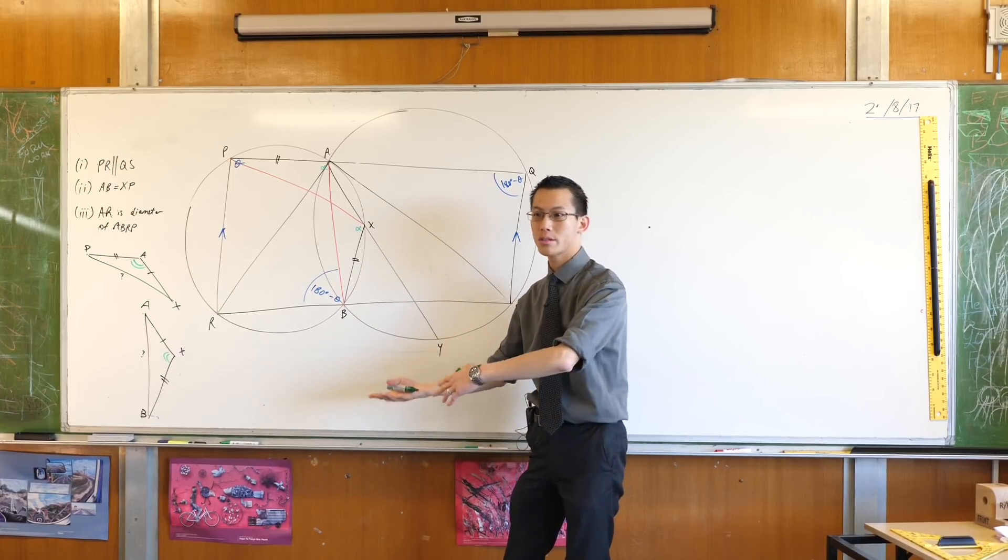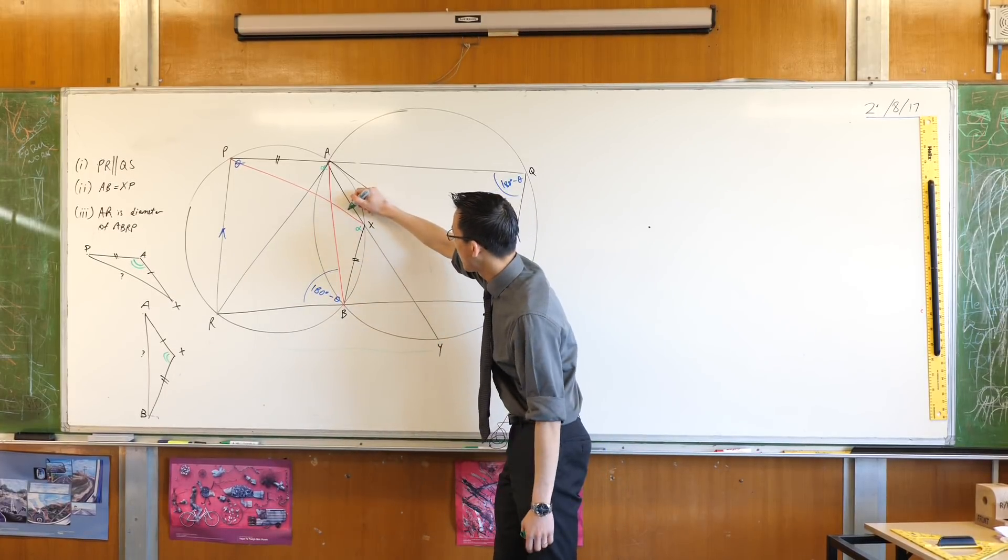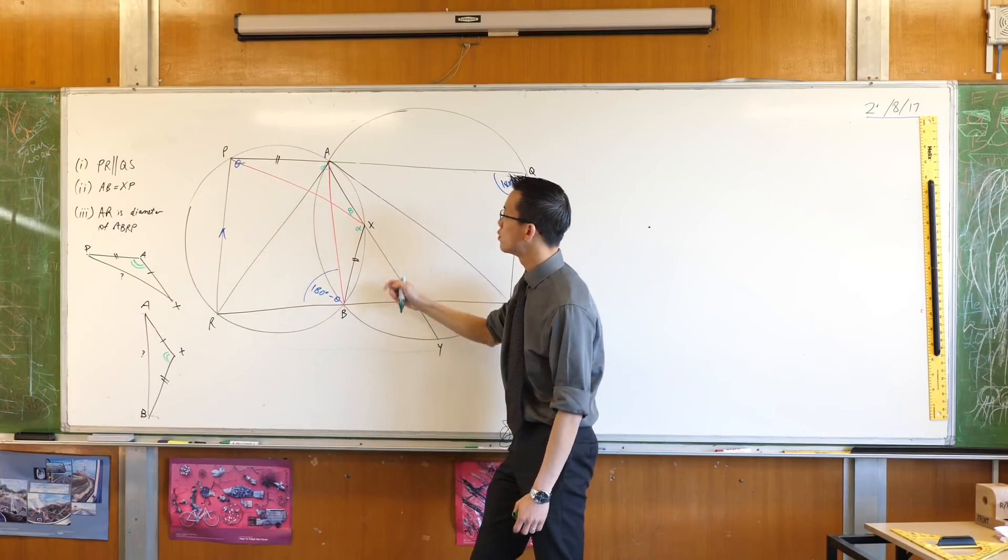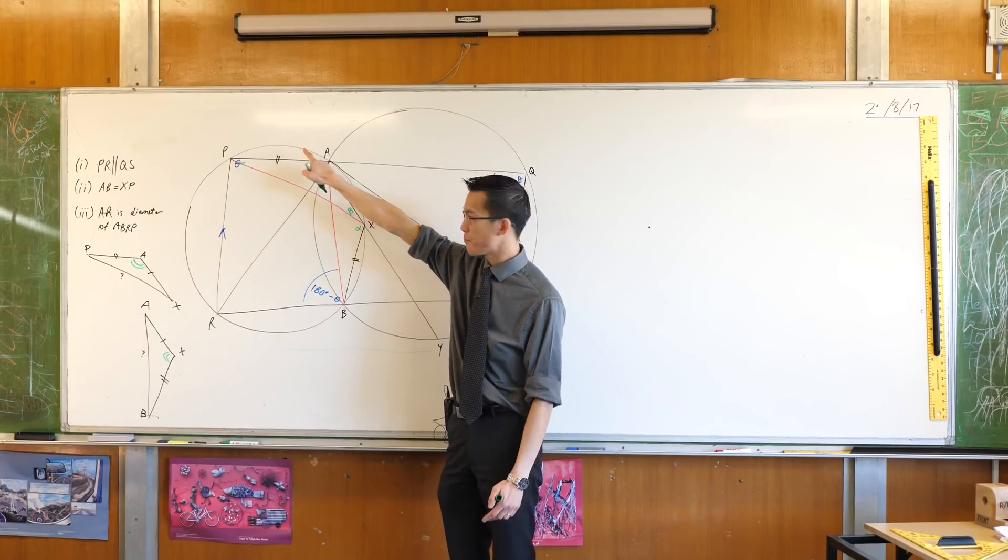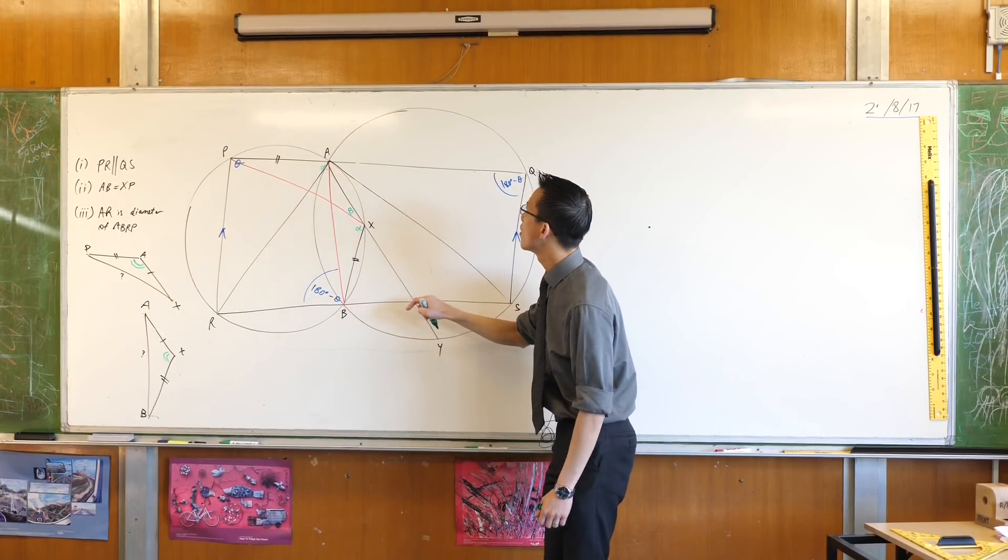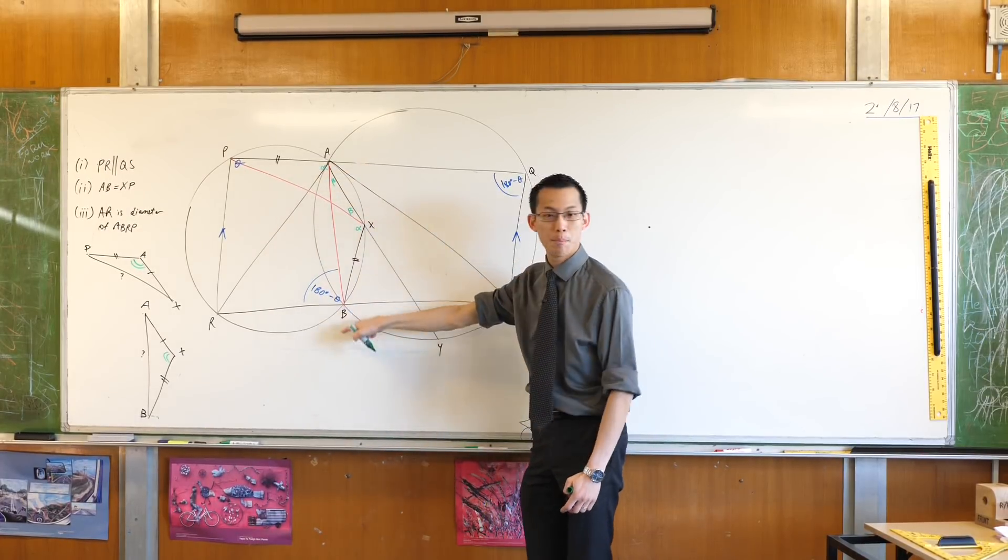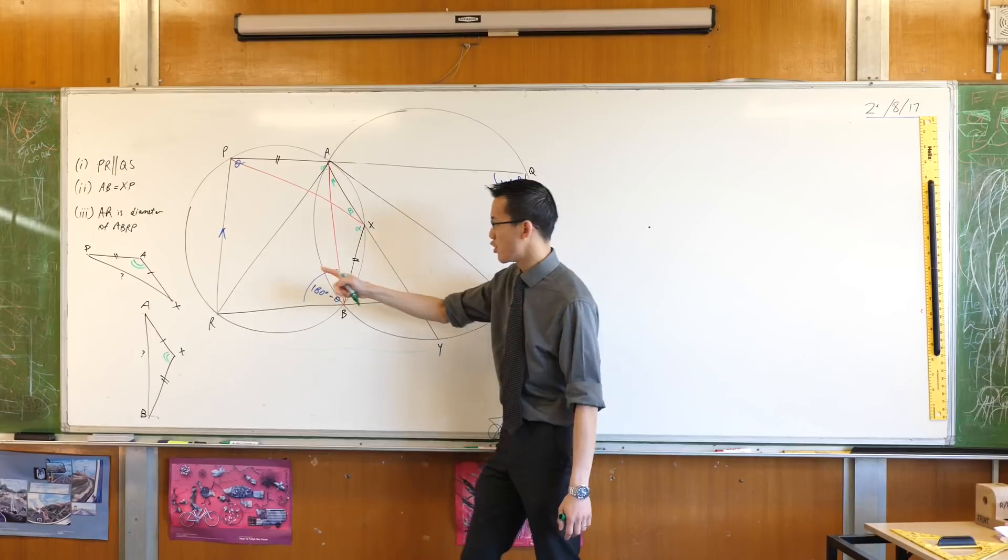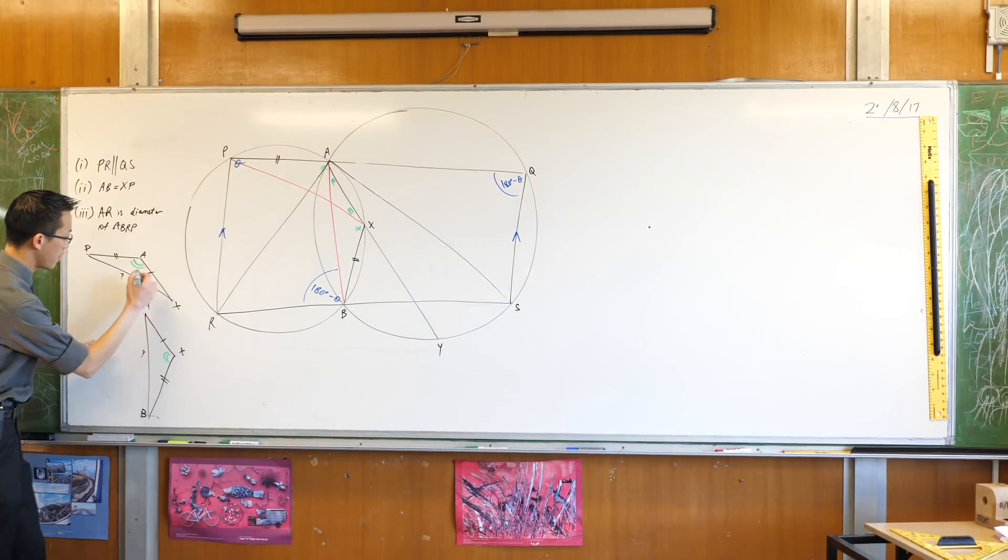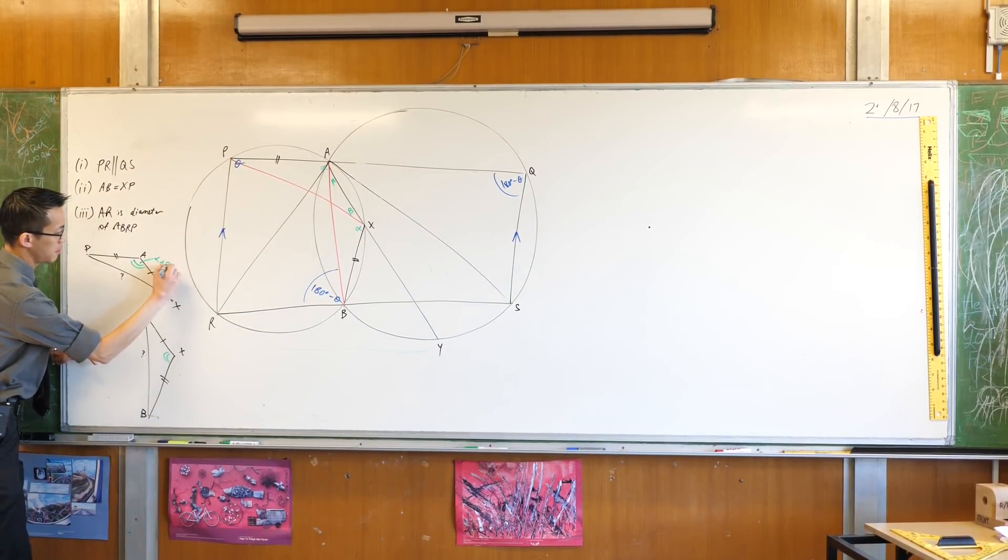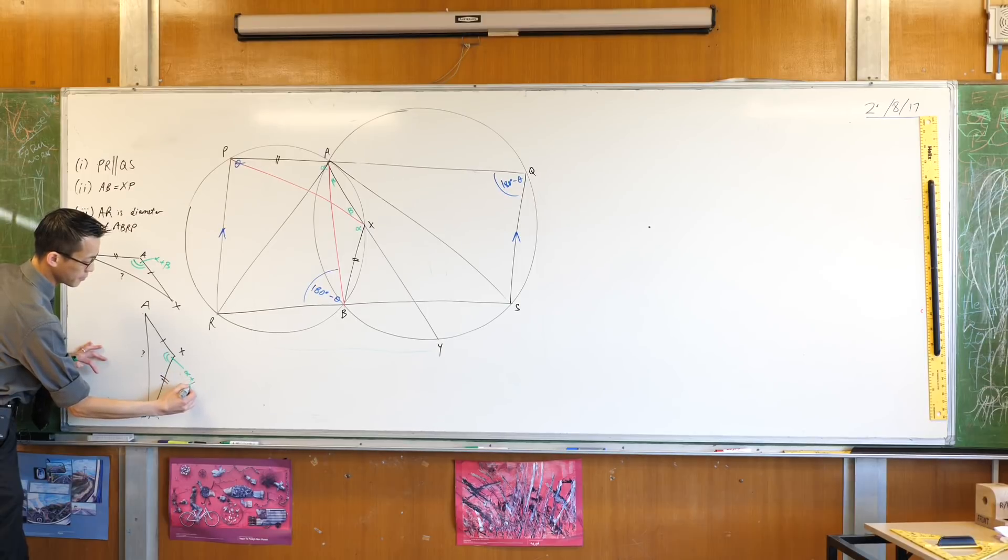And by similar logic, because AP is an equal chord to BX, the angles standing on those chords are also equal. So here is the angle formed by chord AP. And where is it? I've even lost it. Here it is. Here is the angle formed by chord BX. So they're equal. So now I've got these guys being both alpha plus beta.